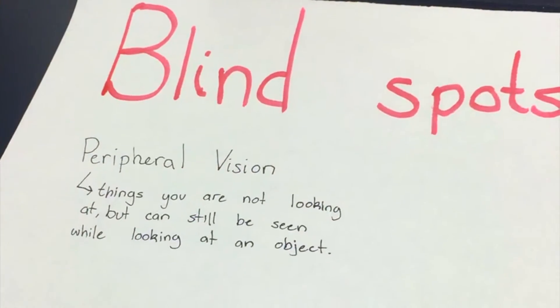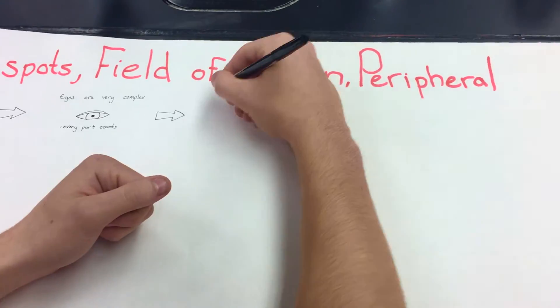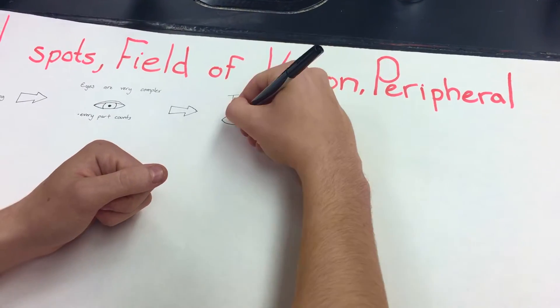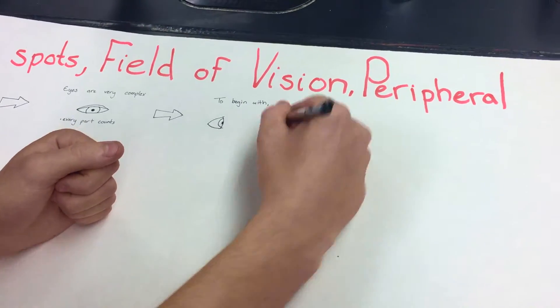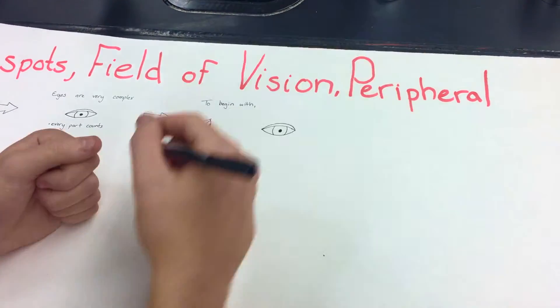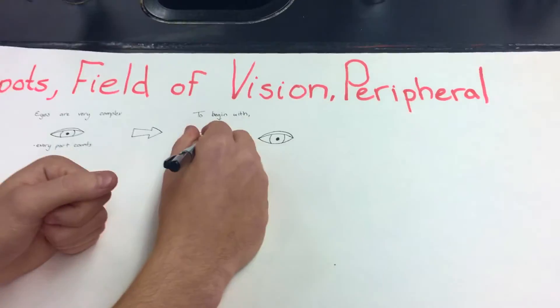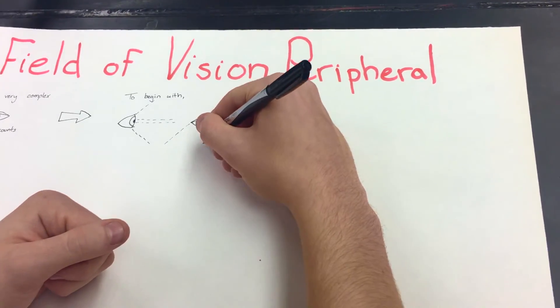Far peripheral vision refers to the points of view towards the edges of the field of vision, whereas mid peripheral refers to the points in the middle of the visual field. The peripheral vision portion of the field of vision are the things you are not looking at but can still be seen while you are looking at an object. This would be when you look forward and can still tell that three fingers are being held up although it's closer to the edge of your vision.